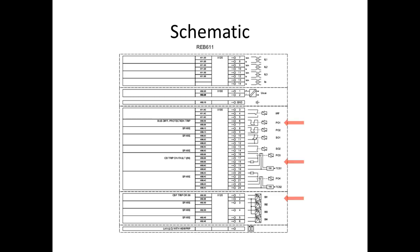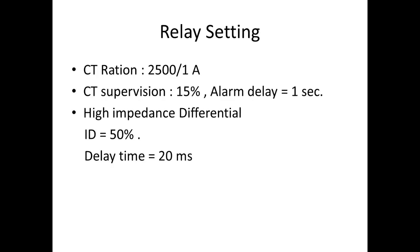Let's see the settings of the relay. The CT ratio is 2000/1 amps. CT supervision is 15 percentage. Alarm delay is once again high. Let's go into the relay configuration.